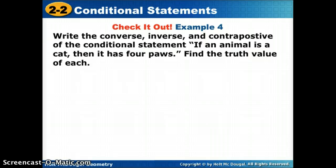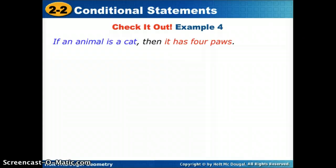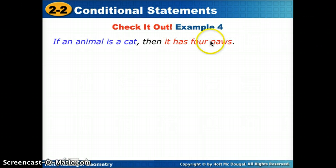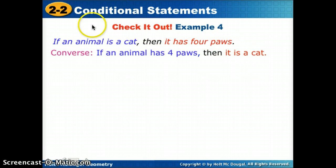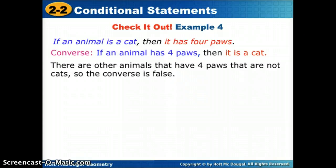Let's try another statement: 'If an animal is a cat, then it has four paws.' For the converse, flip hypothesis and conclusion: 'If an animal has four paws, then it is a cat.' Does an animal with four paws have to be a cat? No — a dog, cow, or bear all have four paws but are not cats. So the converse is false.